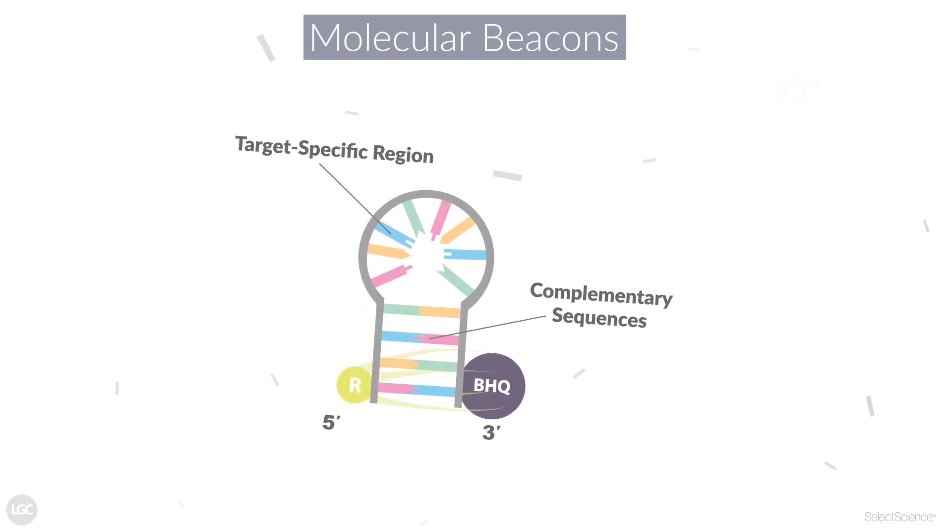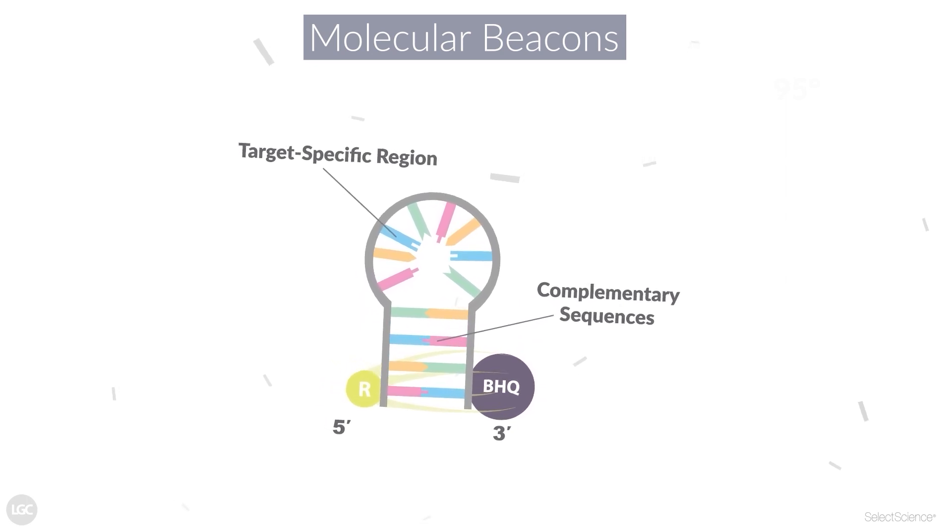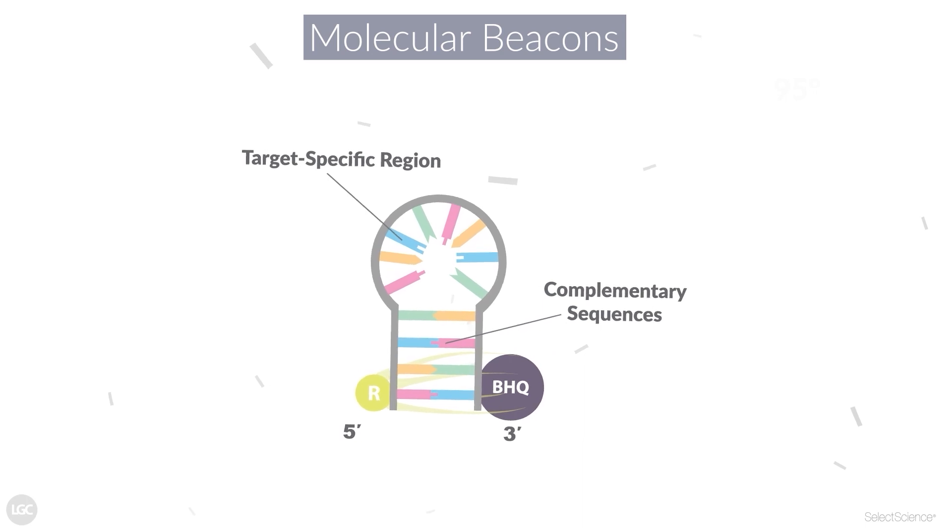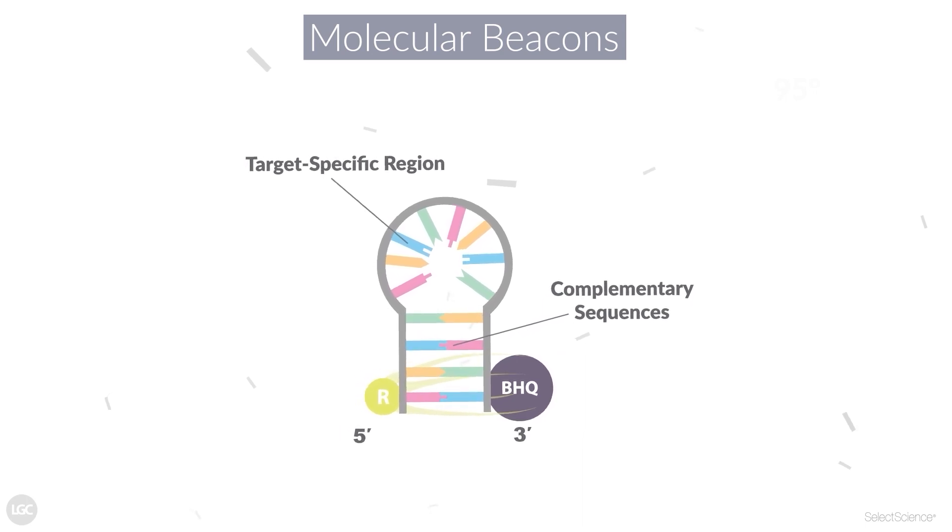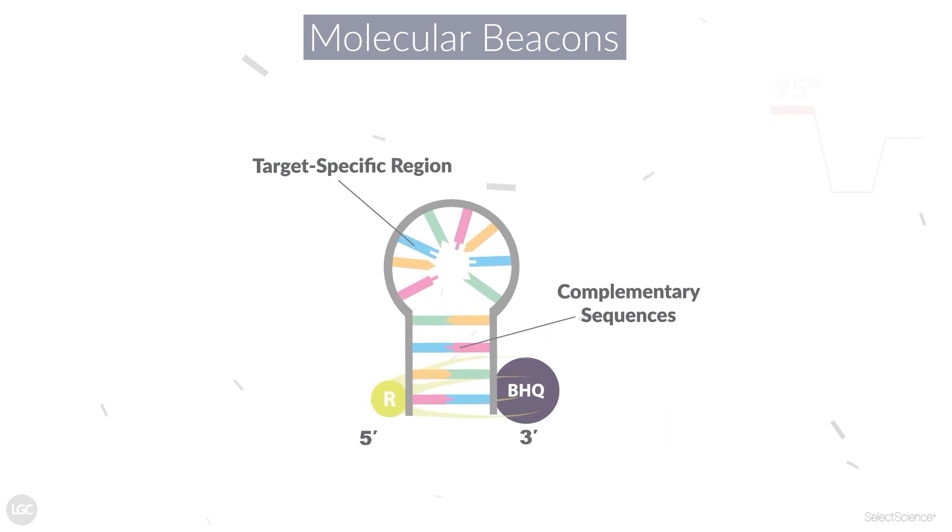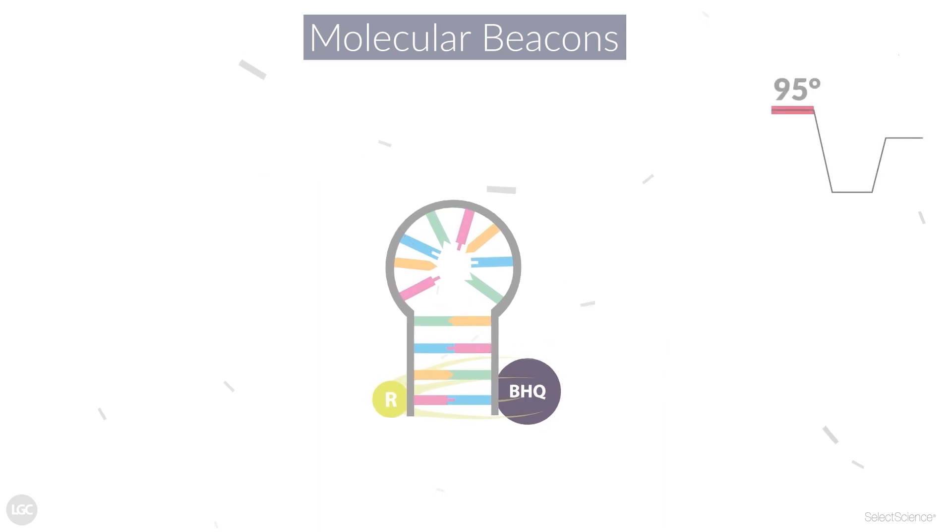This structure brings the 5' reporter and 3' black hole quencher into close proximity so that fluorescence is quenched. Step 1 involves heating to denature the double-stranded target DNA and to open the stem loop structure of the molecular beacon.